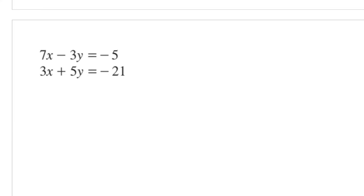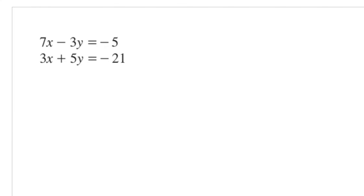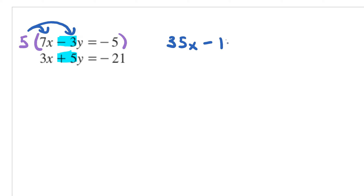Let's move on to the next one. For this problem, I'll change up the style a little bit — let me try tackling the y variables first. You don't have to, but I just wanted to change up the approach. There's a negative 3 and a positive 5, so the question is: how can you make the coefficients in front of the y variables the same? Think about the least common multiple. For 3 and 5, the least common multiple is 15. So I'll multiply the first equation by 5: that gives 35x, 5 times negative 3 is negative 15y, and 5 times negative 5 is negative 25.